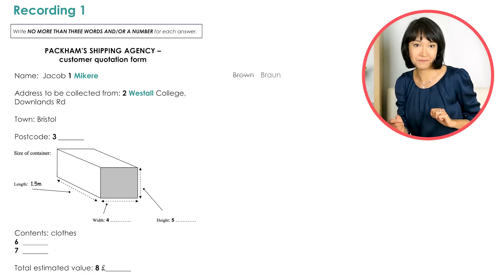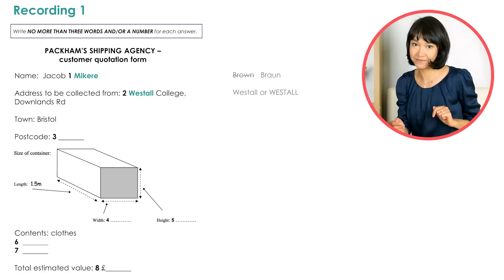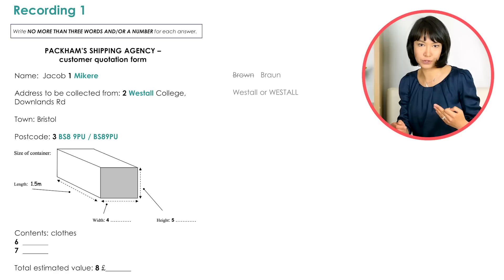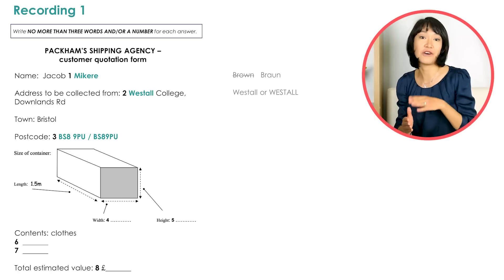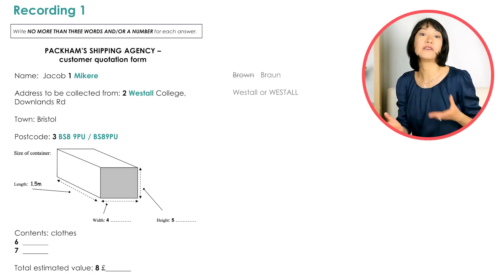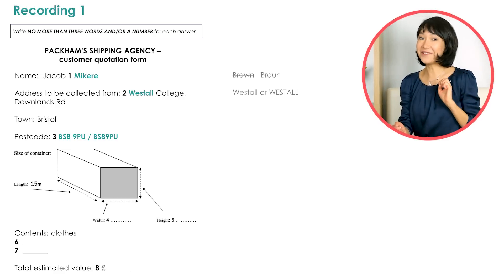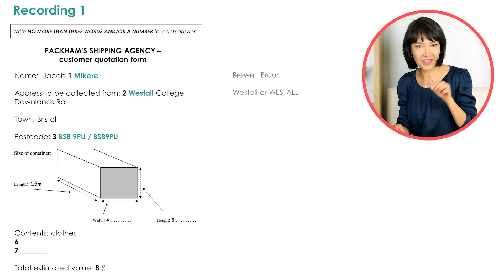Next. When your answer is a name of a place or a surname, don't forget to capitalize the first letter. Alternatively, you can write all the answers in capital letters. Number 3: B-S-8-9-P-U. This is a postcode, a British postcode, which means it's a combination of letters and numbers written with a space in the middle. You may not know that, so both answers with a space and without a space are acceptable. If you remember, they were talking about Bristol, and the first two letters here are B-S, which in our case means Bristol.